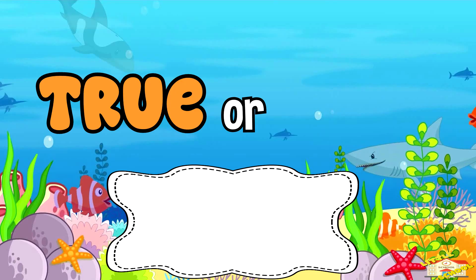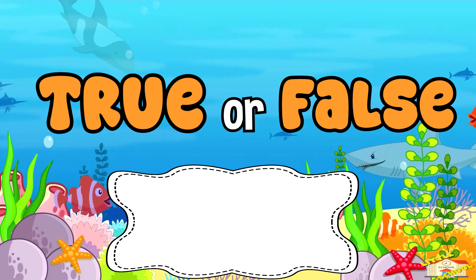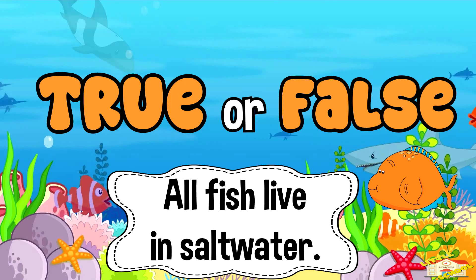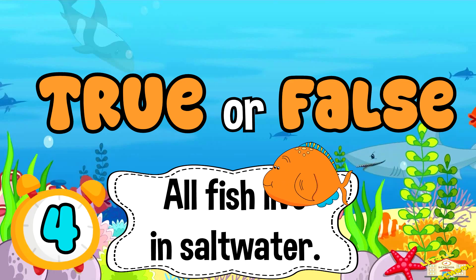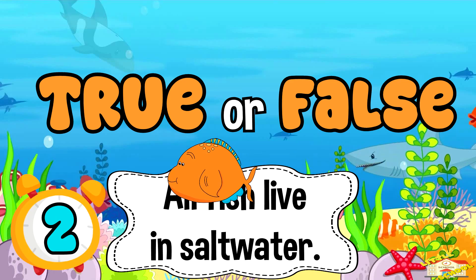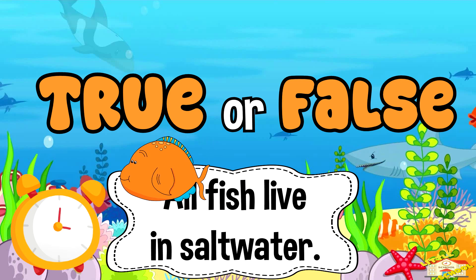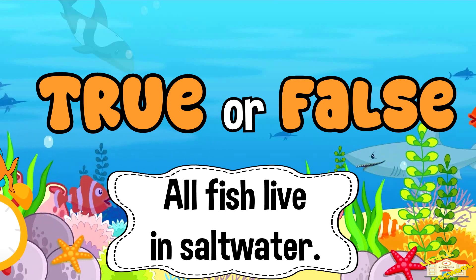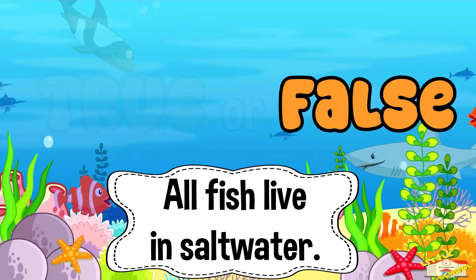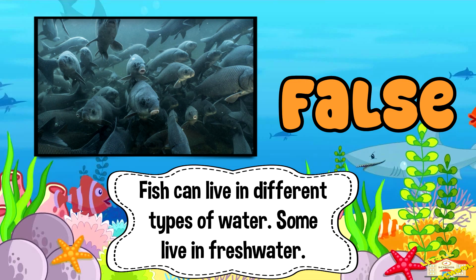True or false: all fish live in salt water? Five, four, three, two, one. And the answer is false. Fish can live in different types of water — some live in fresh water.